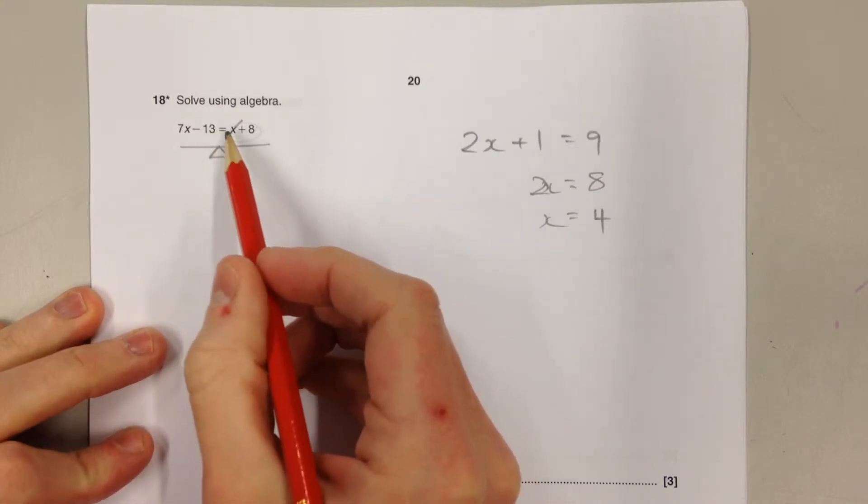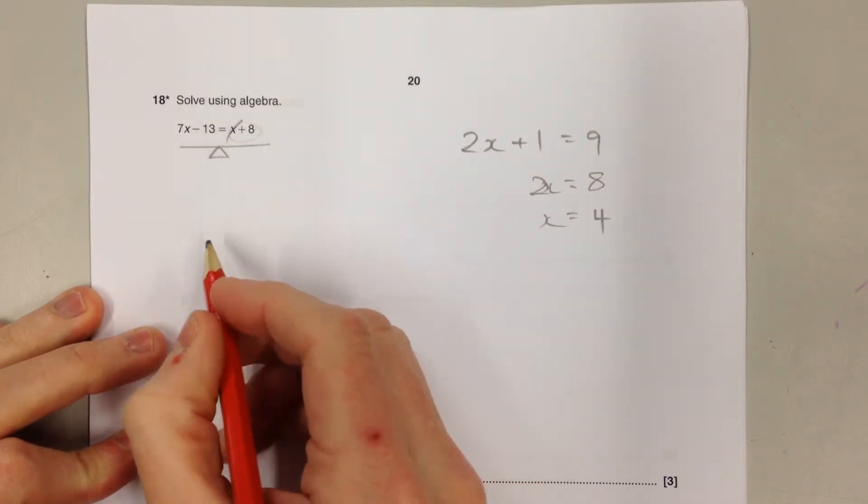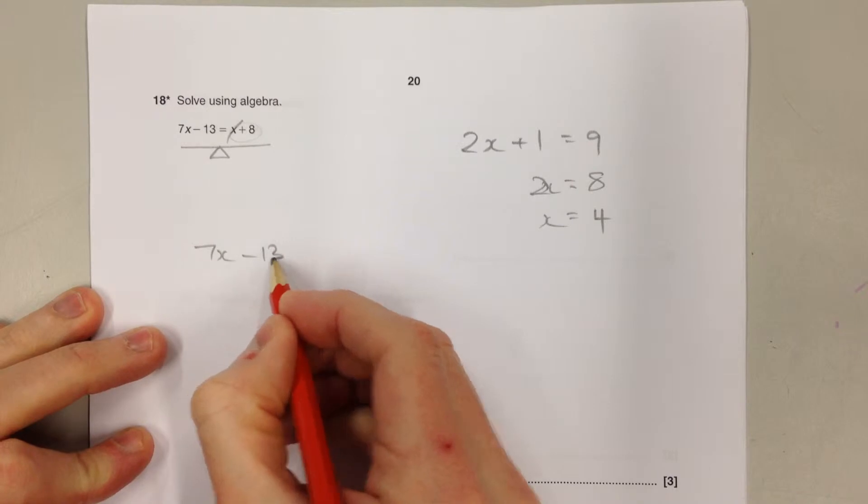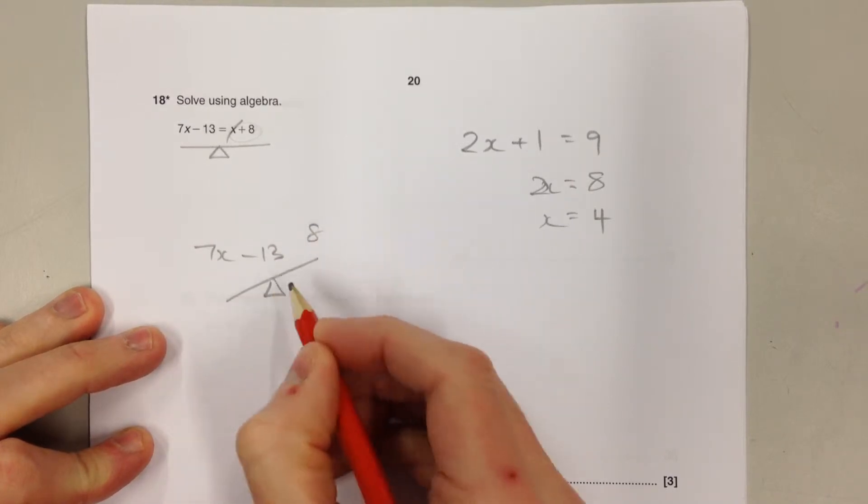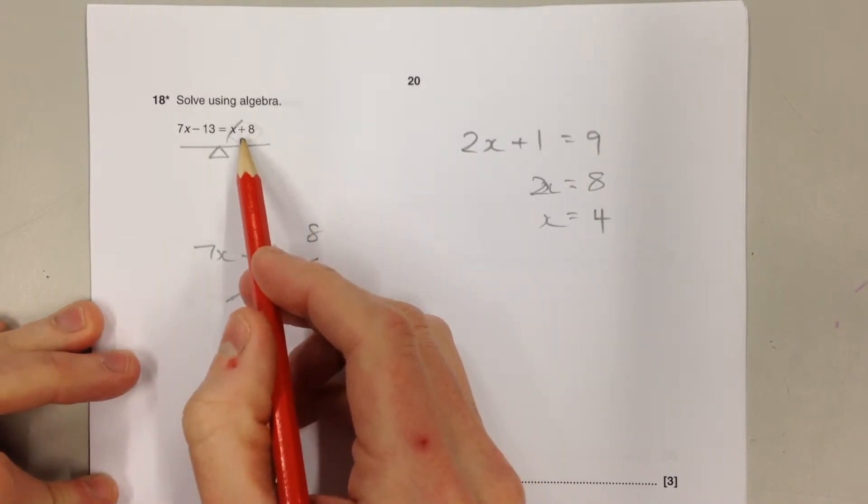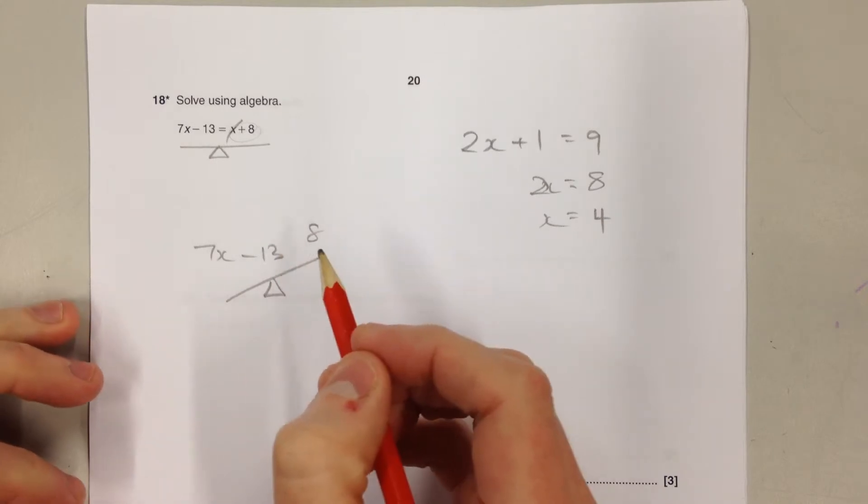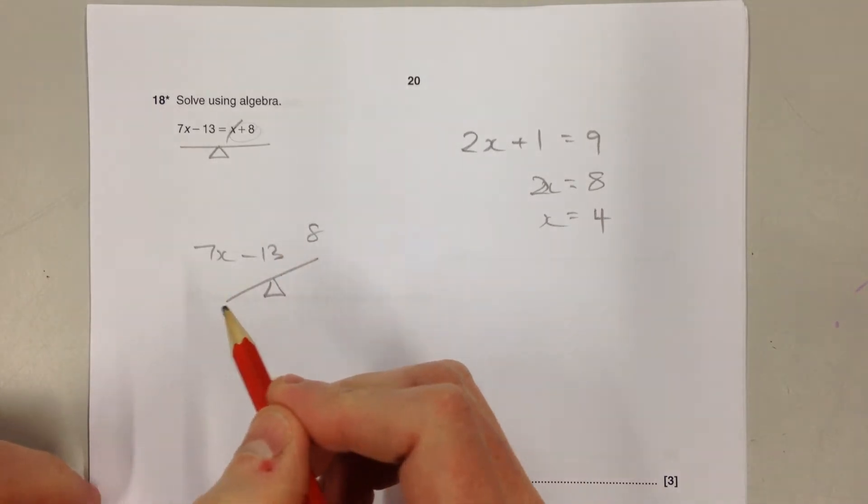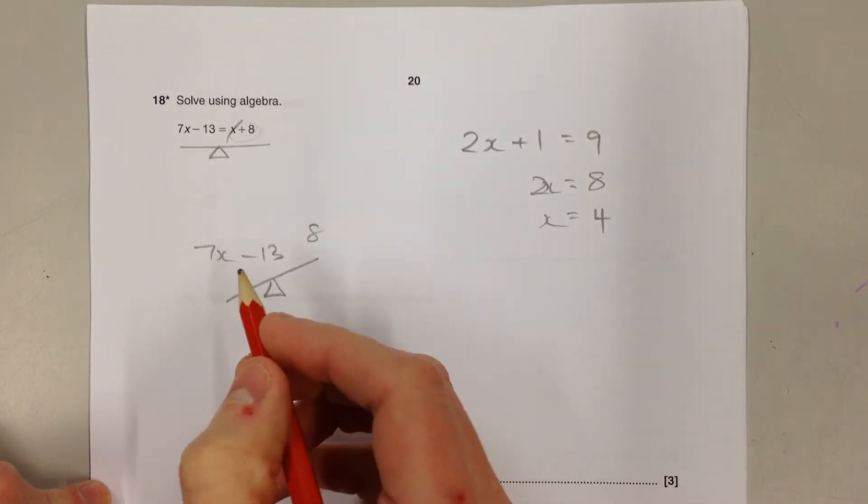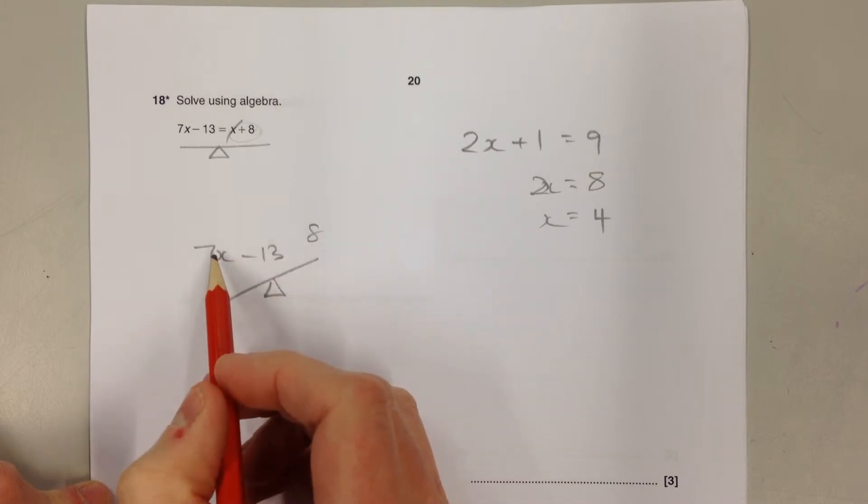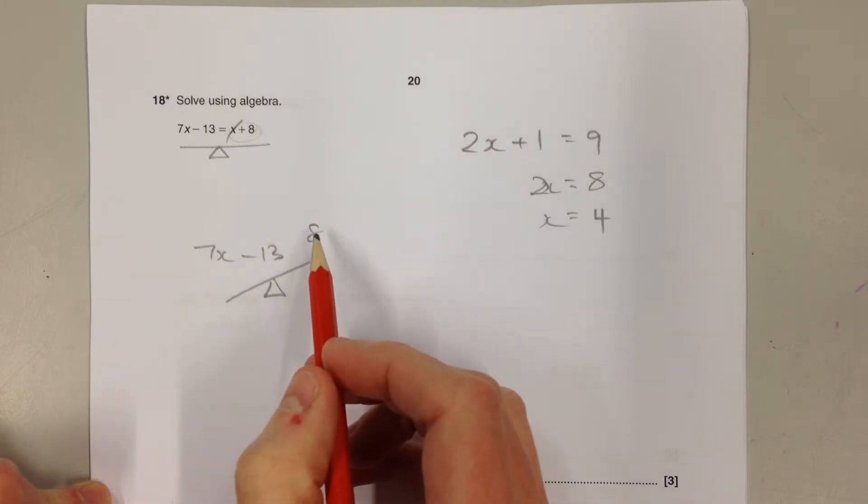The issue with that is if we get rid of something on this right-hand side, we unbalance the equation. We've taken something away from the right-hand side, so they're not equals anymore. The left-hand side's now heavier. We can balance things up again by taking the same away from the left-hand side as we took away from the right-hand side.